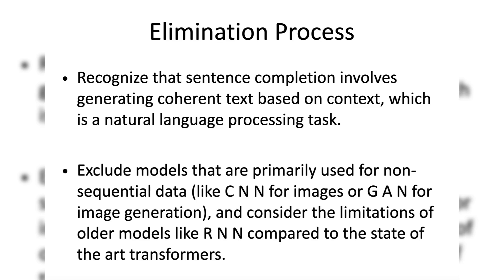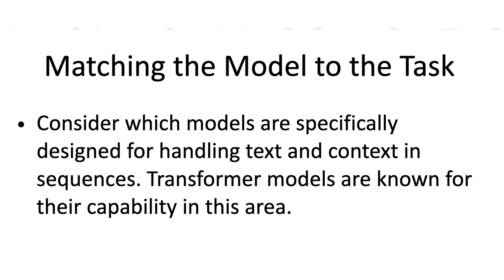To solve this question, the first step is to understand the purpose of each method and then eliminate ones that clearly don't fit. Recognize that sentence completion involves generating coherent text based on context, which is a natural language processing task. Exclude models primarily used for non-sequential data, like CNN for images or GAN for image generation, and consider the limitations of older models like RNN compared to state-of-the-art transformers. Match the model to the task by considering which models are specifically designed for handling text and context in sequences. Transformer models are known for their capability in this area.